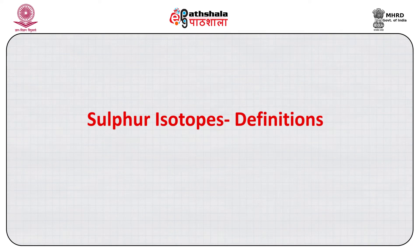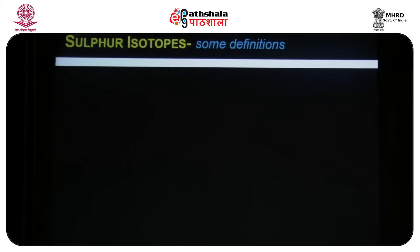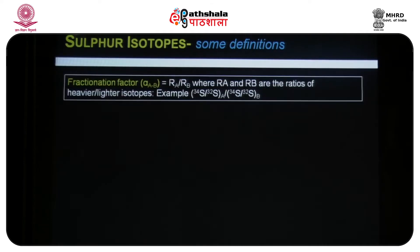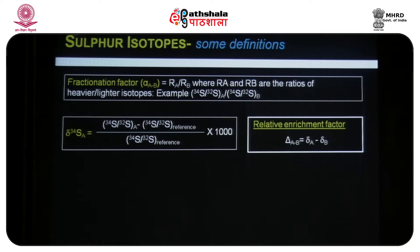Before we get into the details of sulfur isotope studies, let us review some key definitions. The fractionation factor alpha is defined as the ratio of the heavier to lighter isotope between two coexisting phases. The isotopic composition of a phase is compared with a standard and expressed as delta-34S, which equals the (³⁴S/³²S) ratio in a sample minus the (³⁴S/³²S) in a reference material, divided by (³⁴S/³²S) in the reference material, expressed in parts per thousand.